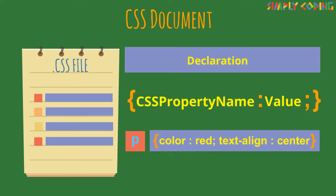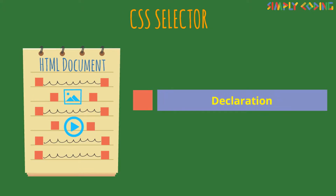For example, all P elements will be center aligned with a red text color. As we know, the selector points to the HTML element you want to style.